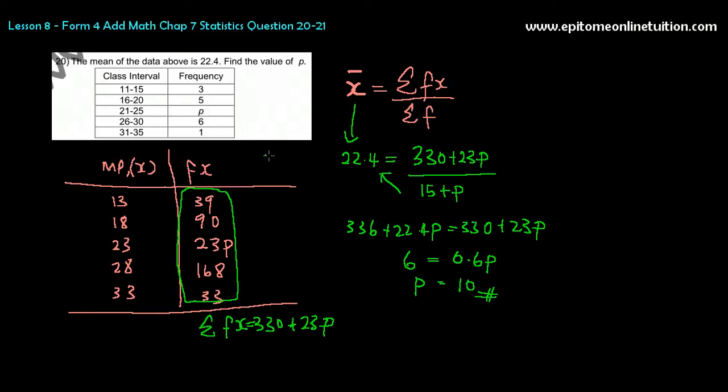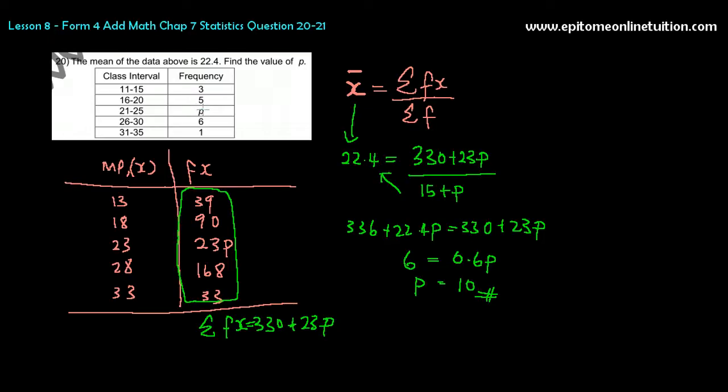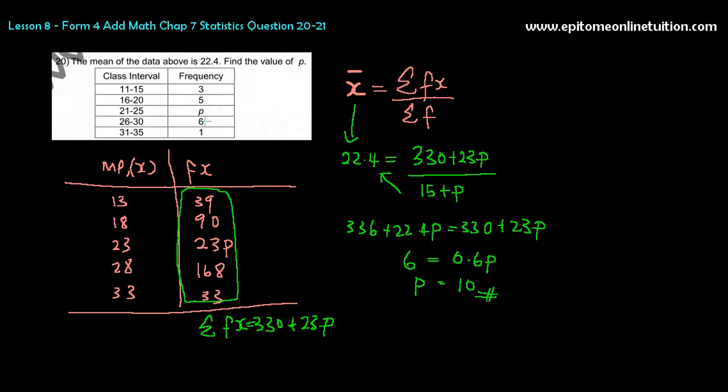Now, a note. Please use your common sense when you're doing this. I always say that if you get p as a decimal, then it's not possible. Why? Because p is frequency.